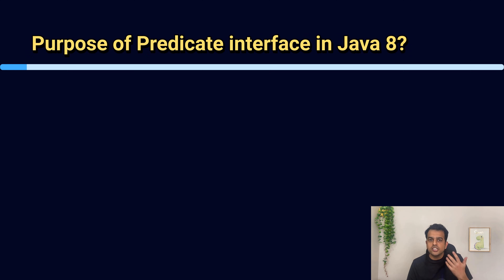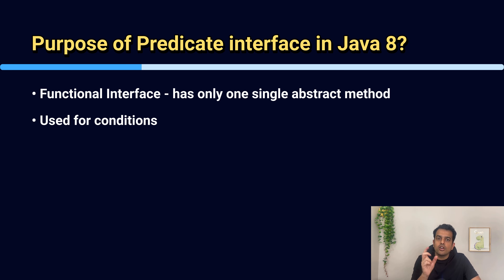The next question is: what is the purpose of the Predicate interface in Java? Predicate is a functional interface, which means it has only one single abstract method. It is used for conditions — it takes one input and returns either true or false. It is mostly used for filtering, so whenever we use the filter method, we pass a predicate and this makes our code clean and easy to read. The interviewer also asked a follow-up question: can we combine predicates? Yes, we can combine predicates using methods called and, or, and negate.